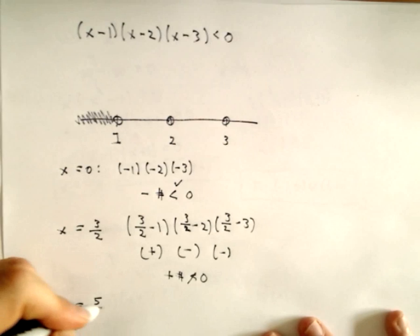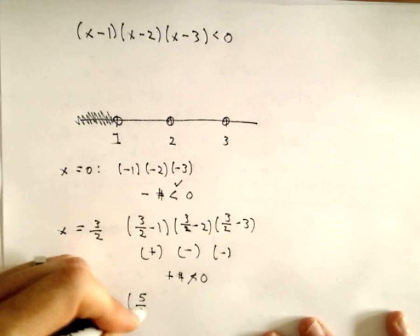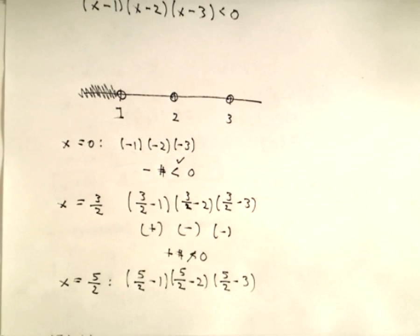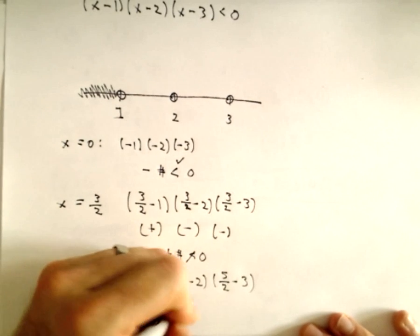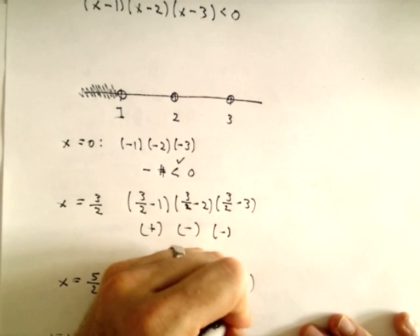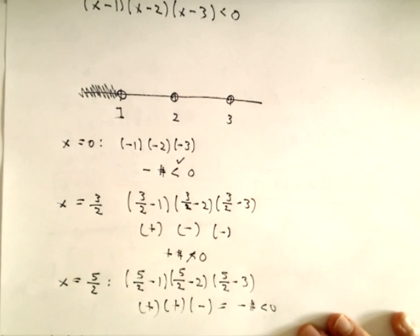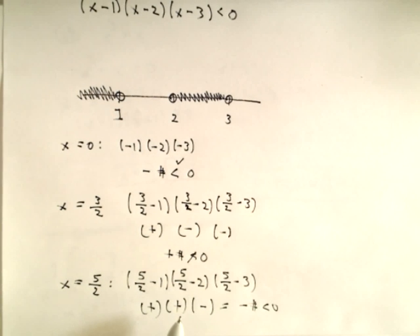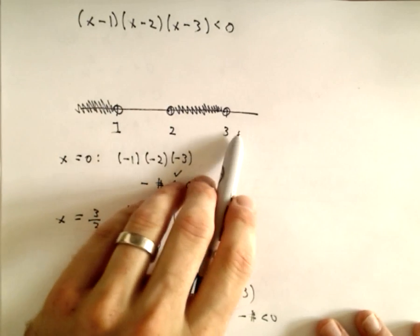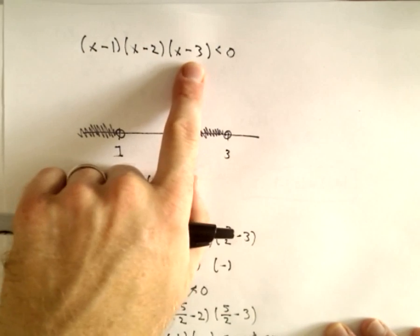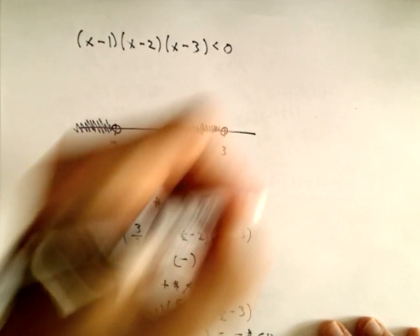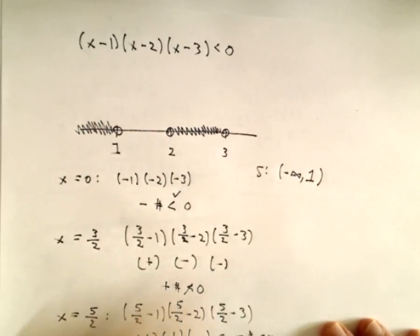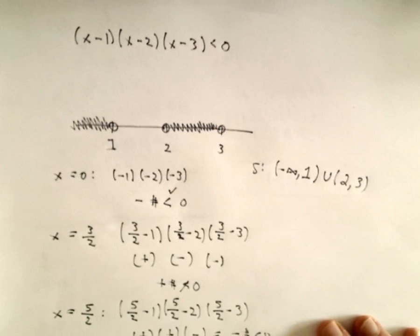Using x equals five halves (2.5, between 2 and 3): five halves minus 1, five halves minus 2, five halves minus 3 — you're really just checking signs. That's a positive times a positive times a negative, which gives us a negative number. A negative number is certainly less than 0, so numbers between 2 and 3 work. And if we take a number larger than 3, it's positive times a positive times a positive — not less than 0. So the solution set is from negative infinity up to 1, parenthesis, union from 2 to 3, with parentheses on both.